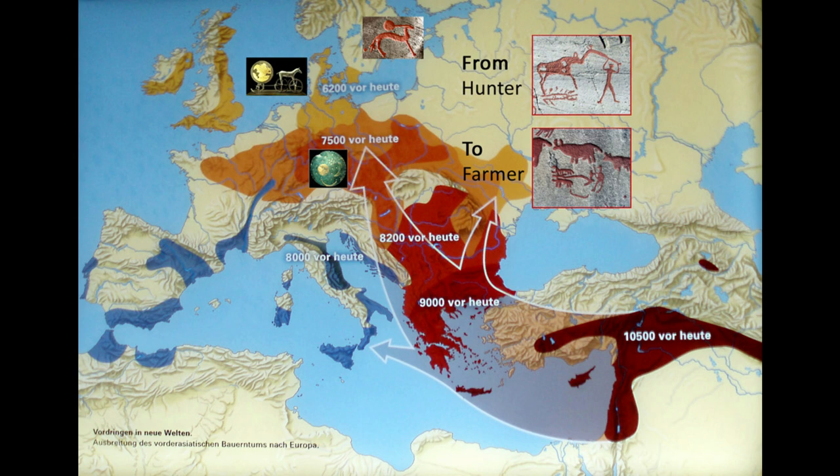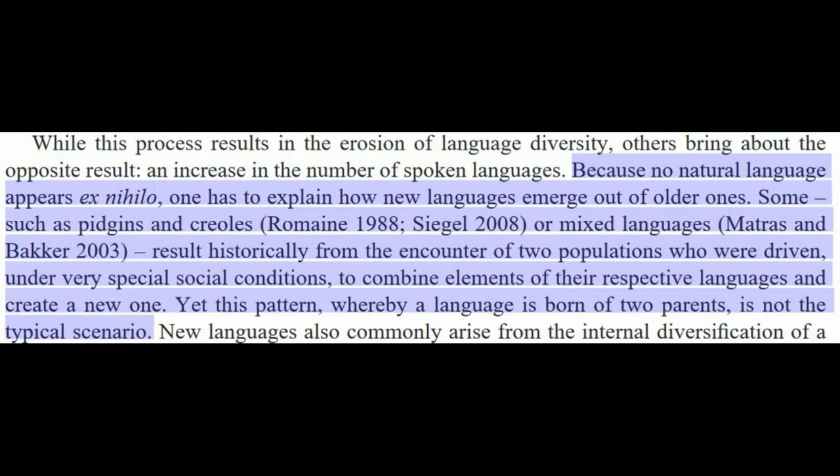But these are topics for future episodes. Section 1.1: Because no natural language appears ex nihilo, one has to explain how new languages emerge out of older ones. Some, such as Pidgins and Creoles or mixed languages, result historically from the encounter of two populations who were driven, under very special social conditions, to combine elements of their respective languages and create a new one. Yet this pattern, whereby a language is born of two parents, is not considered the typical scenario.